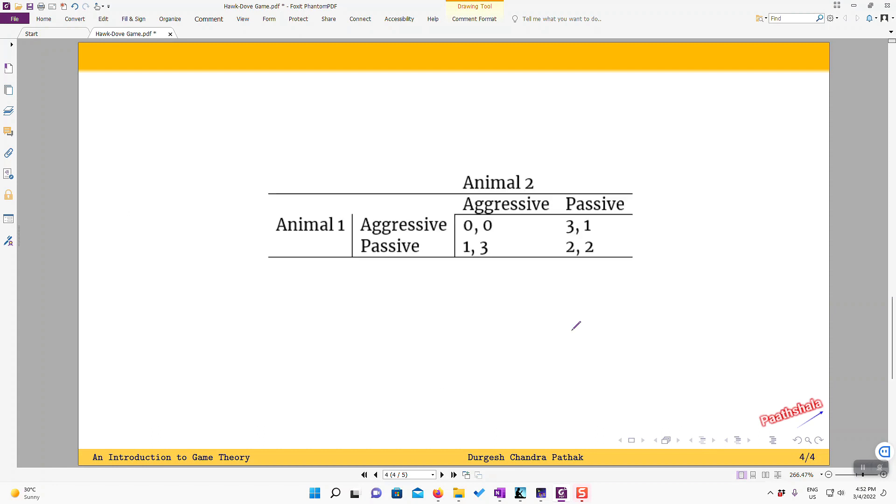So what are the Nash equilibrium? How do we approach that? I take the easiest way, so this is the best response analysis. So suppose that animal one is choosing to be aggressive, then what is the best for animal two to do? So animal two, if he chooses aggressive, he gets zero. If he chooses passive, he gets one.